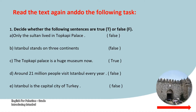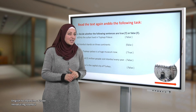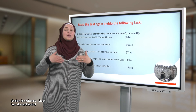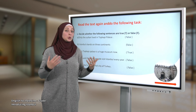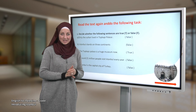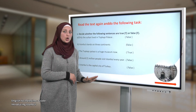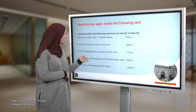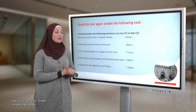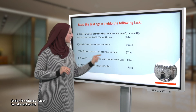C: the Topkapi Palace is a huge museum now — yes, that is true. You can see many different things there like jewelry, pictures, maps, and many other gorgeous things. D: around 21 million people visit Istanbul every year — that is false. It is 12 million people who visit Istanbul every year.